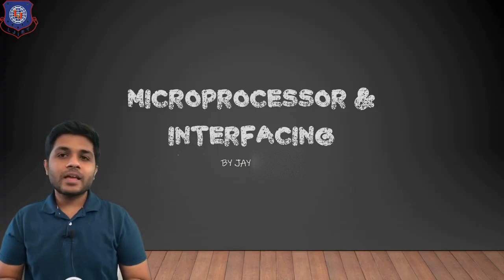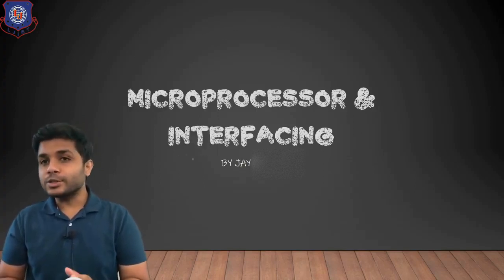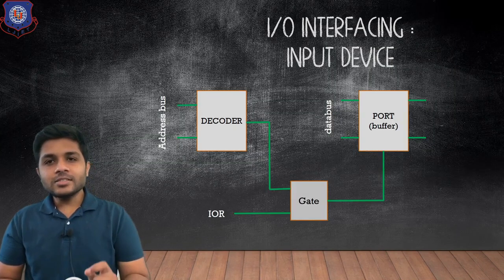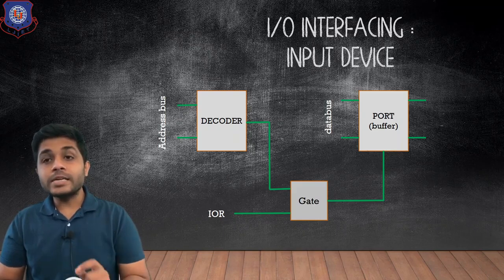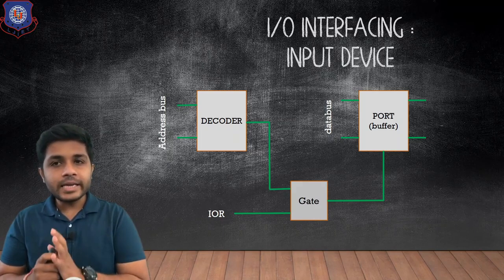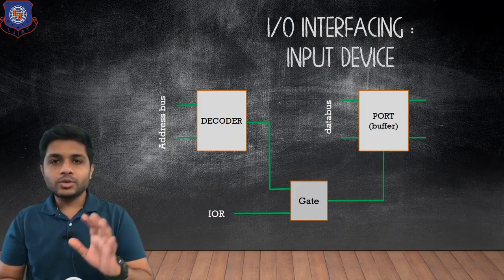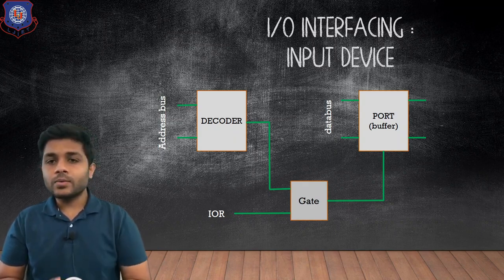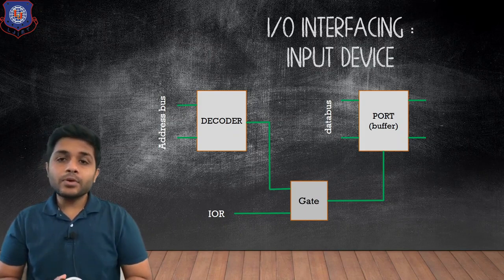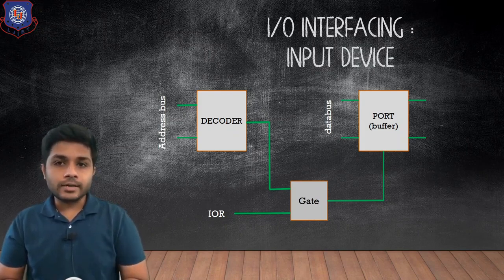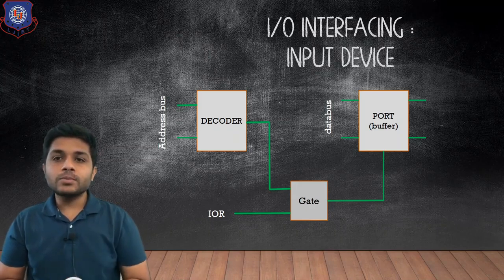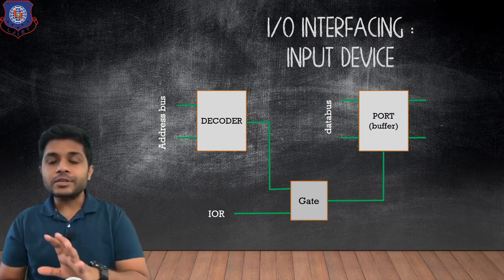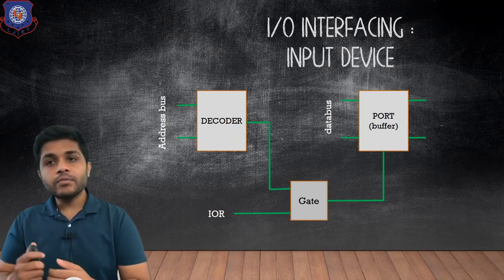Hi everyone, I'm Jay and today we are going to see why buffer is used as input port and latch is used as output port. This is a block diagram of input interfacing. If you want to interface any input device, you have to draw this figure. You require one decoder to which the address bus is connected. The output of the decoder goes to a gate, and at the other input of the gate the I/O read control signal is connected. The output of the gate is connected to a buffer, and on one side of the buffer the data bus from the microprocessor is connected.